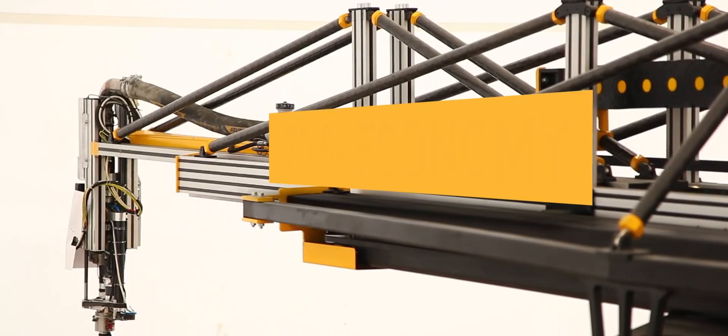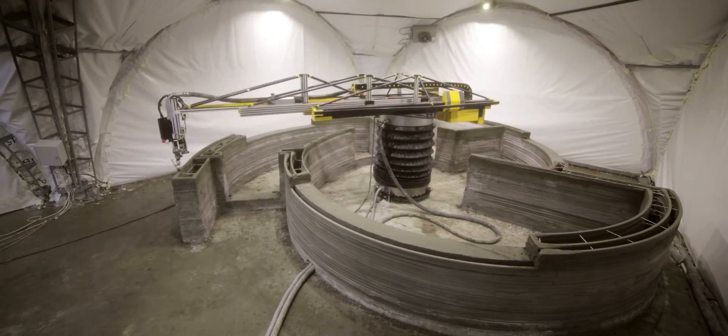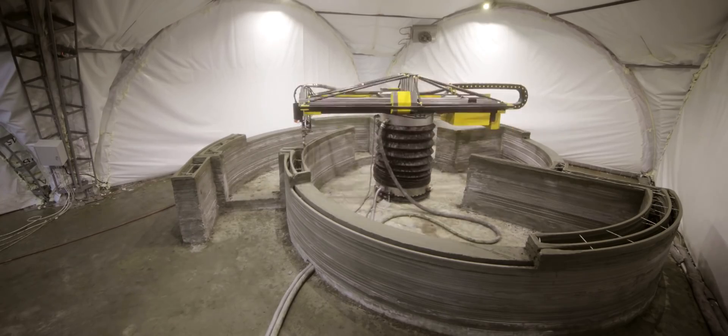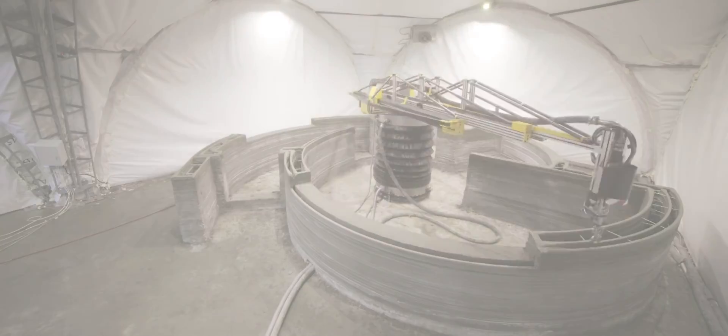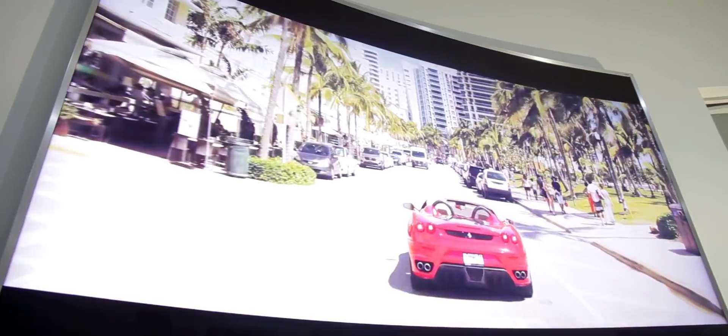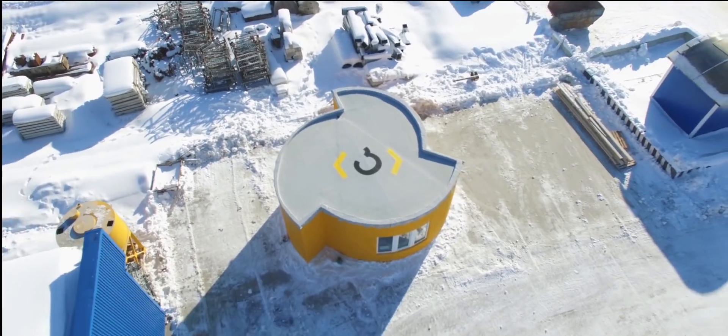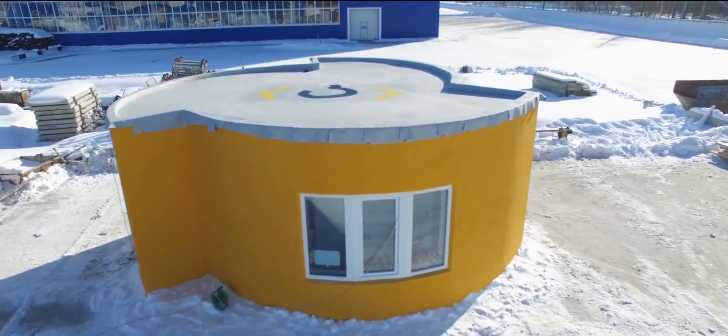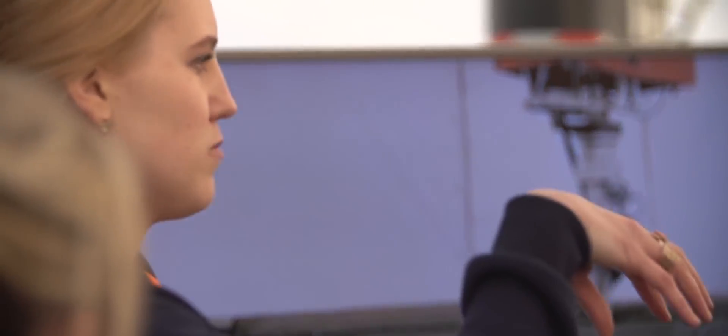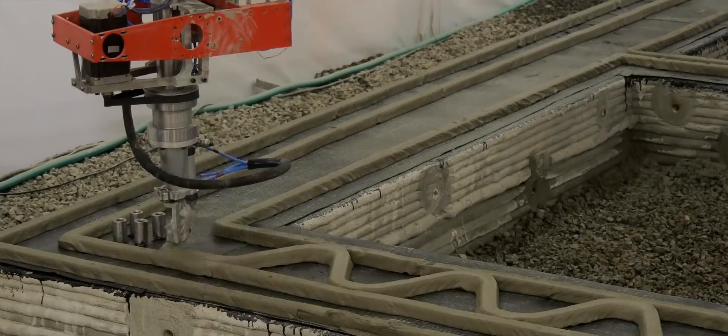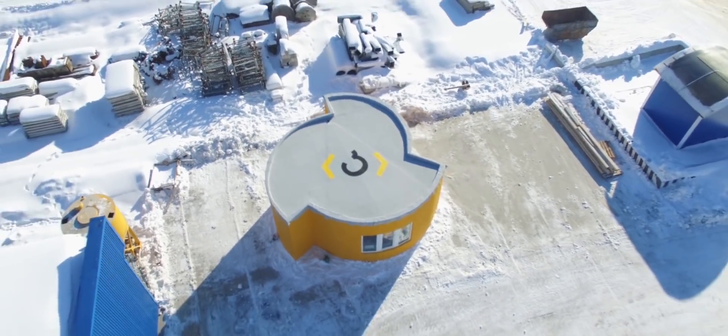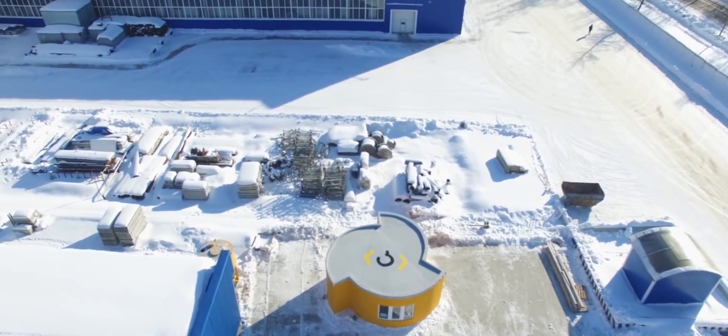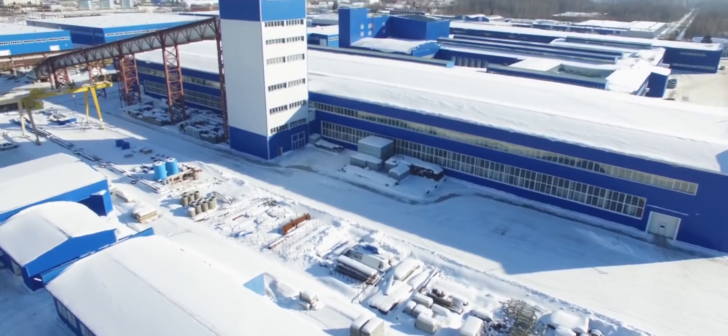The use of Apis Cor Construction 3D printer allows to save up to 70% on erecting building boxes, compared to traditional material and labor-intensive construction methods. The Apis Cor Company and its partners are confident that this house was the first step which convinced the world that 3D technology on the market today is a reality. 3D printers enter the global market and construction sites worldwide. Apis Cor. Building the future, today.